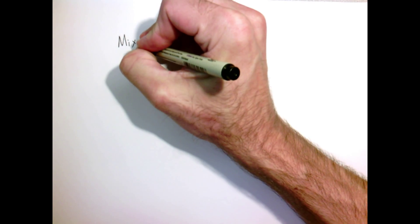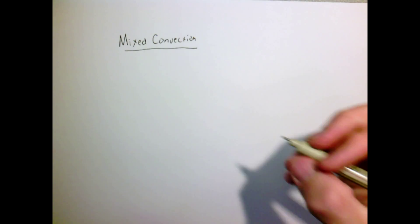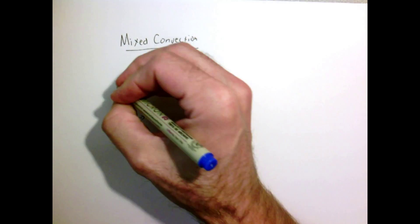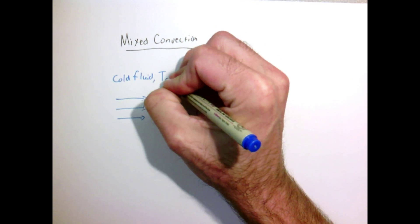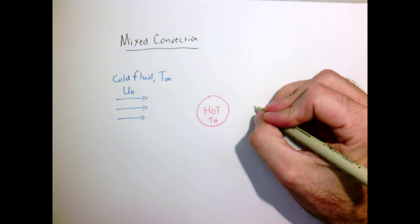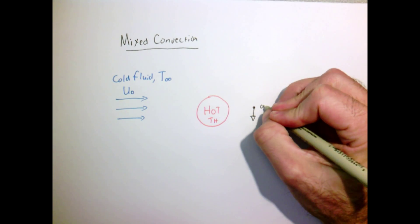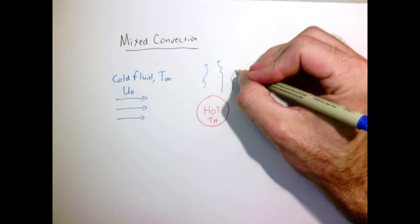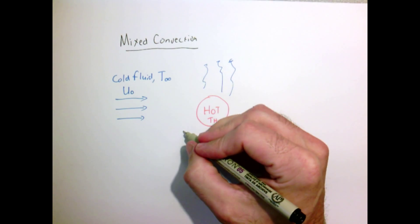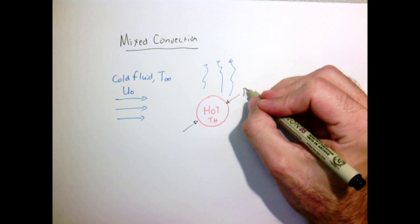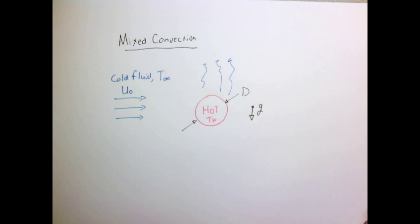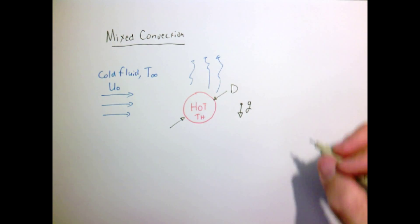Let's consider one last case. This will be mixed convection where effects of both forced and free convection may matter. We're going to have a hot object held at a constant temperature T_hot, and we'll say it's a cylinder with diameter D. It's going to be in a gravitational field. We're going to have a cold fluid with temperature T∞ blowing with a velocity U₀ that we know. So we're putting a fan on this object, but it's hot and it's in gravity, so we might also have natural convection.